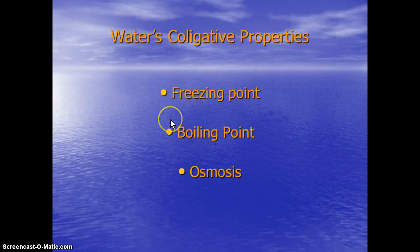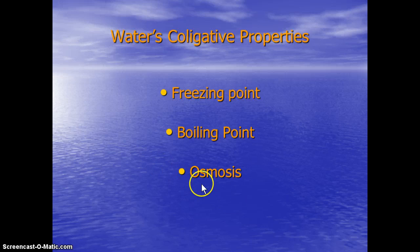So the point at which they change states between solid and liquid and gas, and also some other properties, such as how well they osmose, or transfer from one place to the other due to density across barriers, these are what we call the colligative properties of a substance. And another consequence of the bonds of water and its molecular structure is that it has unique colligative properties.